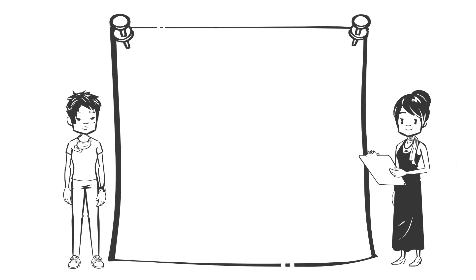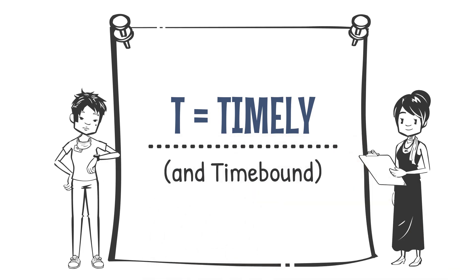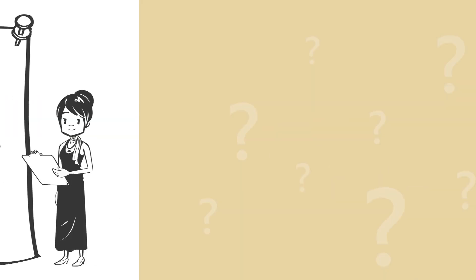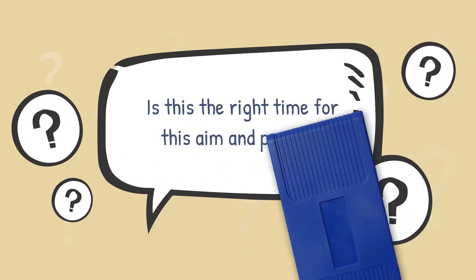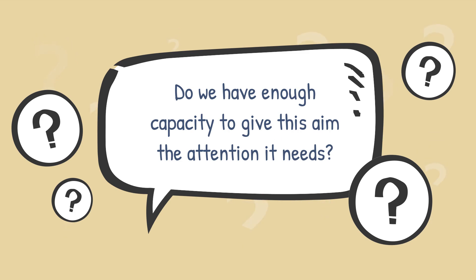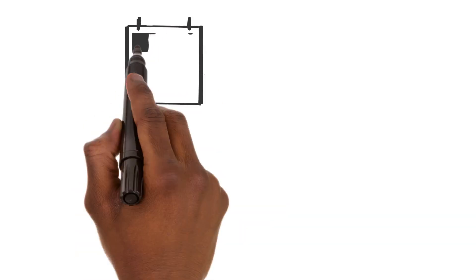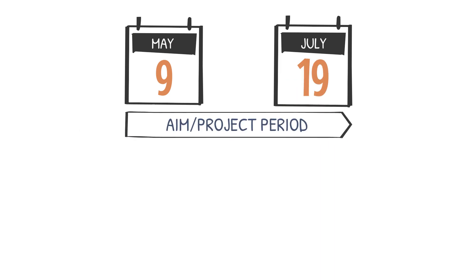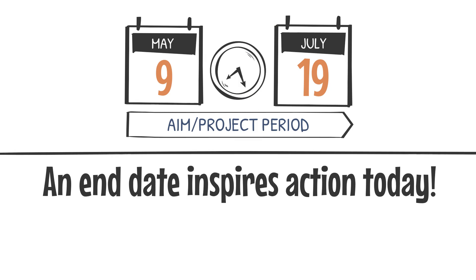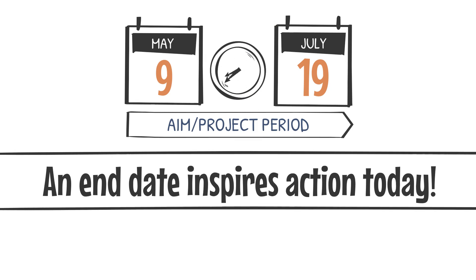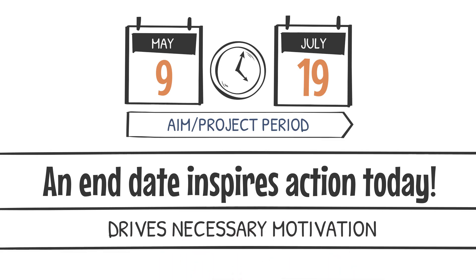Lastly, T — timely and time-bound. Here we address a sixth W: when. We first ask, is this the right time for this aim and project? In other words, do we have enough capacity to give this aim the attention it needs and deserves? Then we set specific time boundaries for the effort. Without an end date, there is no sense of urgency, no reason to take any action today. Without making an aim time-bound, it can be ignored and placed on the back burner indefinitely. Having the specific time frame and ensuring the team is held accountable to that time frame drives the necessary motivation to accomplish the aim.